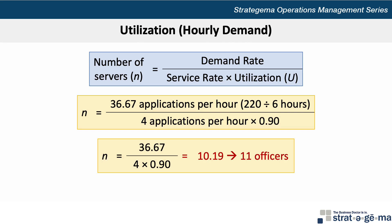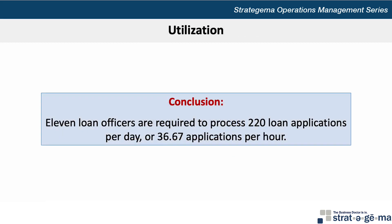You can see in the formula we simply move the 6-hour workday from the denominator into the numerator. Our conclusion is that 11 loan officers are required to process 220 loan applications per day, or 36.67 applications per hour.